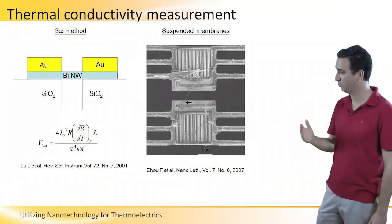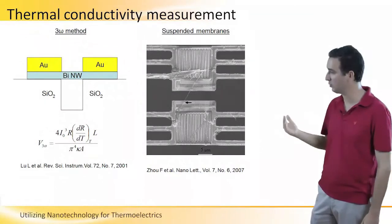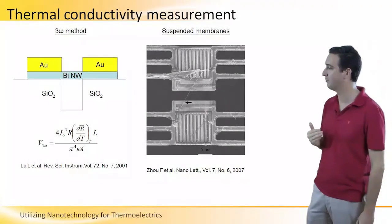So an alternating current with a frequency of 1 Omega causes a temperature fluctuation along the nanowire with a frequency of 2 Omega.